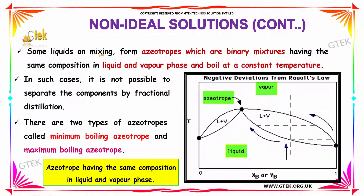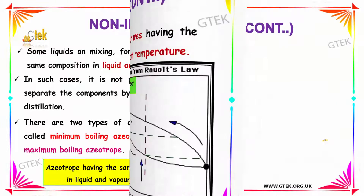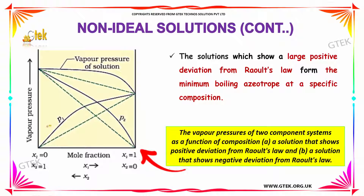Some liquids on mixing form azeotropes, which are binary mixtures having the same composition in liquid and vapor phase and boil at a constant temperature. In such cases, it is not possible to separate the components by fractional distillation. There are two types of azeotropes: minimum boiling azeotrope and maximum boiling azeotrope. Solutions which show large positive deviations from Raoult's law form the minimum boiling azeotrope at a specific composition.